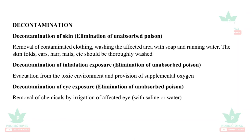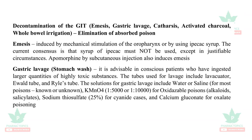Decontamination of the skin: elimination of the unabsorbed poison, removal of contaminated clothing, washing the affected area with soap and running water. Decontamination of inhalation exposure: evacuation of the patient from the toxic environment and provision of supplemental oxygen. Decontamination of eye exposure: irrigation of the affected eye with saline or water. Decontamination of the GIT includes emesis, gastric lavage, catharsis, activated charcoal, and whole bowel irrigation.